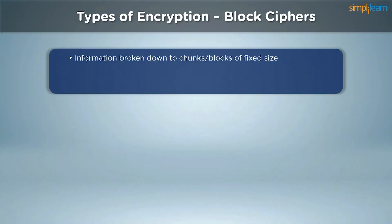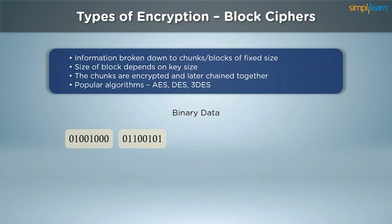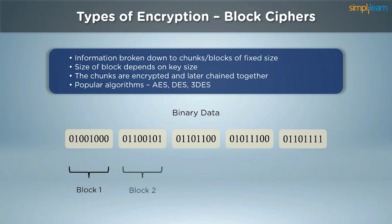On the other hand, block ciphers dissect the raw information into chunks of data of fixed size. The size of these blocks depends on the exact cipher being used. A 128-bit block cipher will break the plain text into blocks of 128 bits each and encrypt those blocks instead of a single digit. Once these blocks are encrypted individually, they are chained together to form a final ciphertext. Block ciphers are much slower but more tamper-proof and are used in some of the most widely used algorithms today.